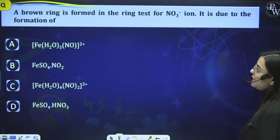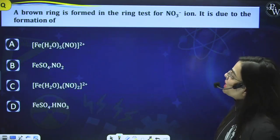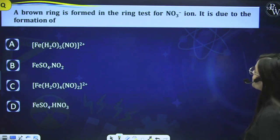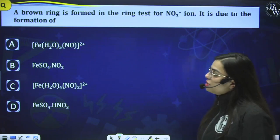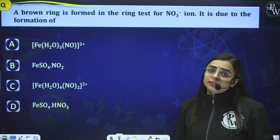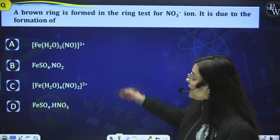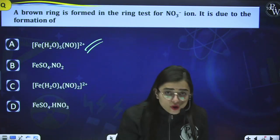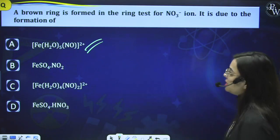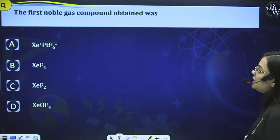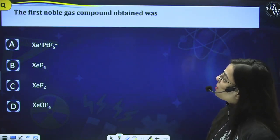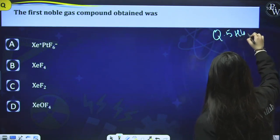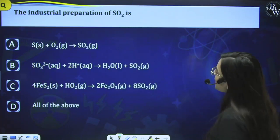Question: A brown ring is formed in the ring test for NO3⁻ ions — it is due to the formation of the compound in option A. The formula and the brown ring test have already been explained. Question: The first noble gas compound obtained — this is homework question 5. Question: The industrial preparation of SO2 — this is homework question 7.